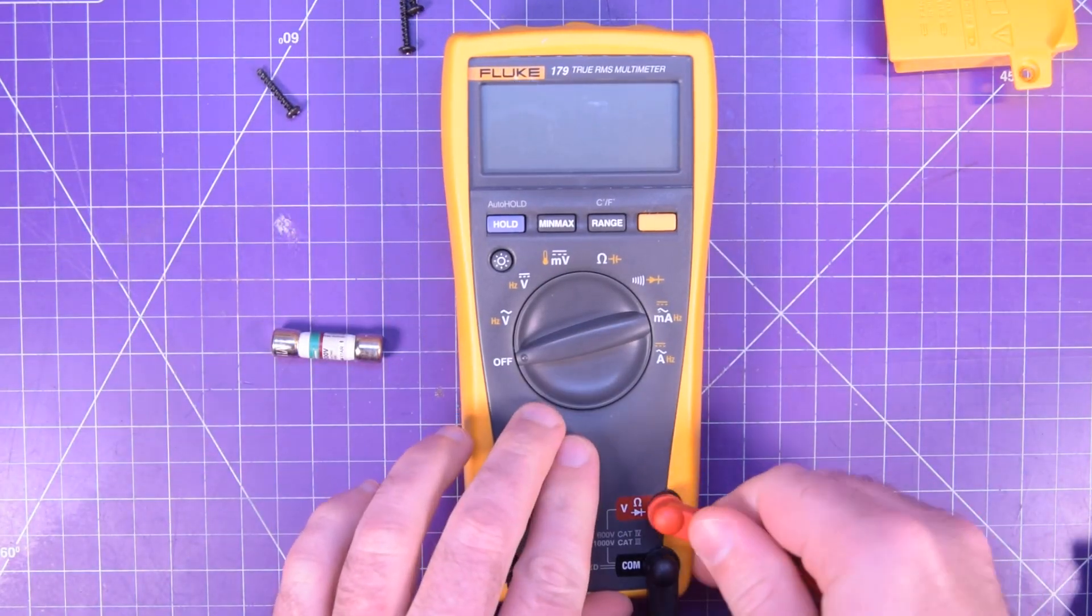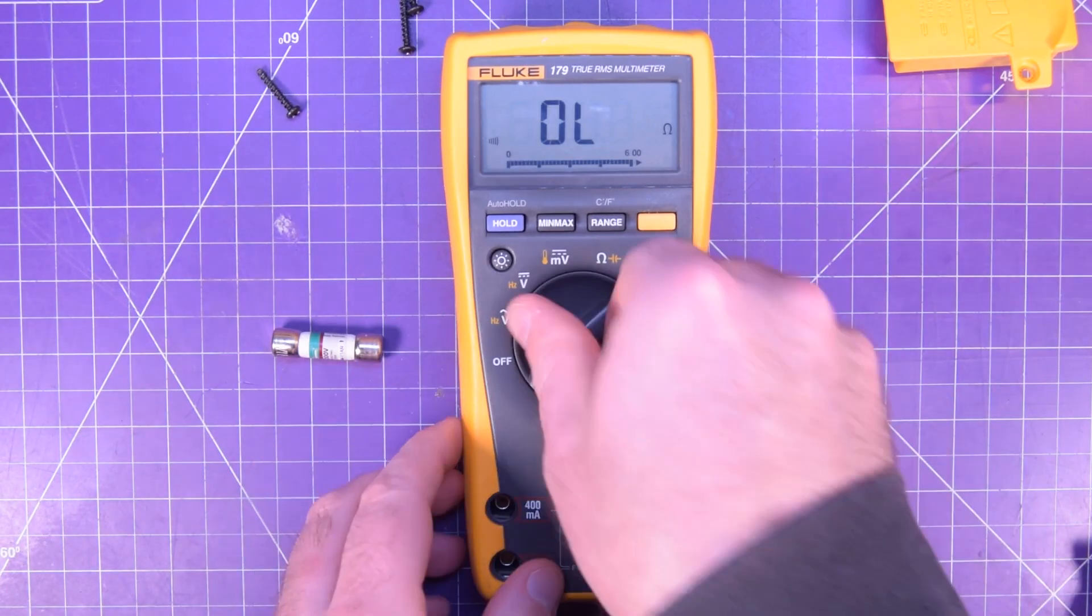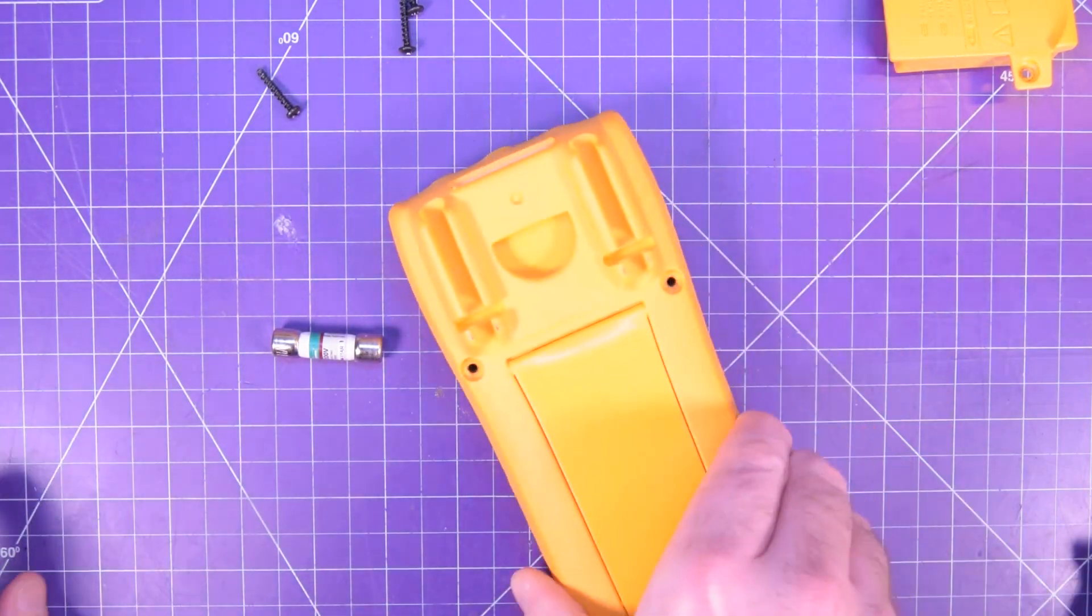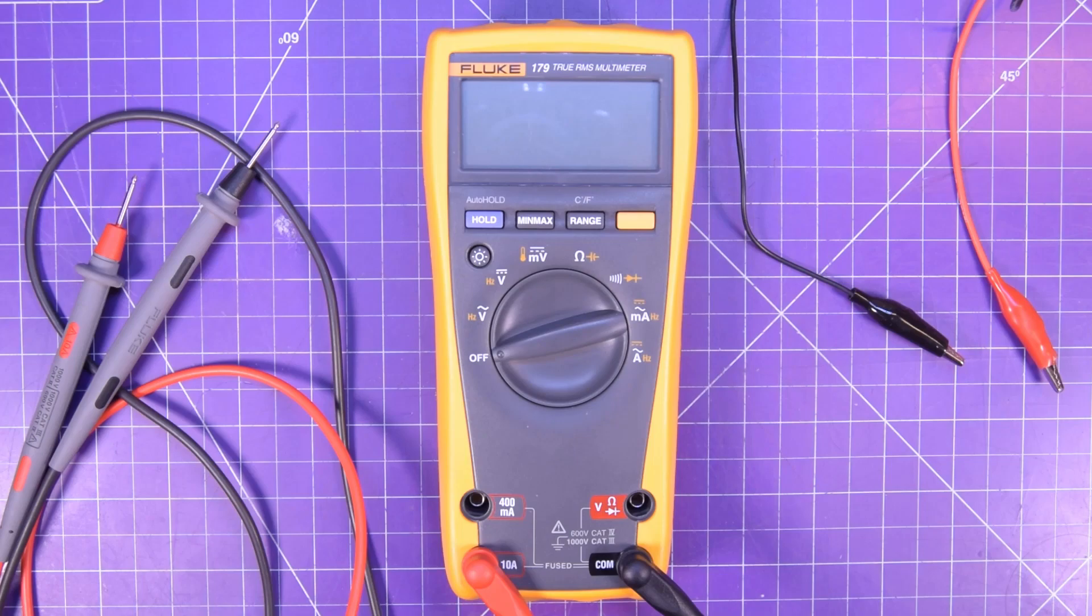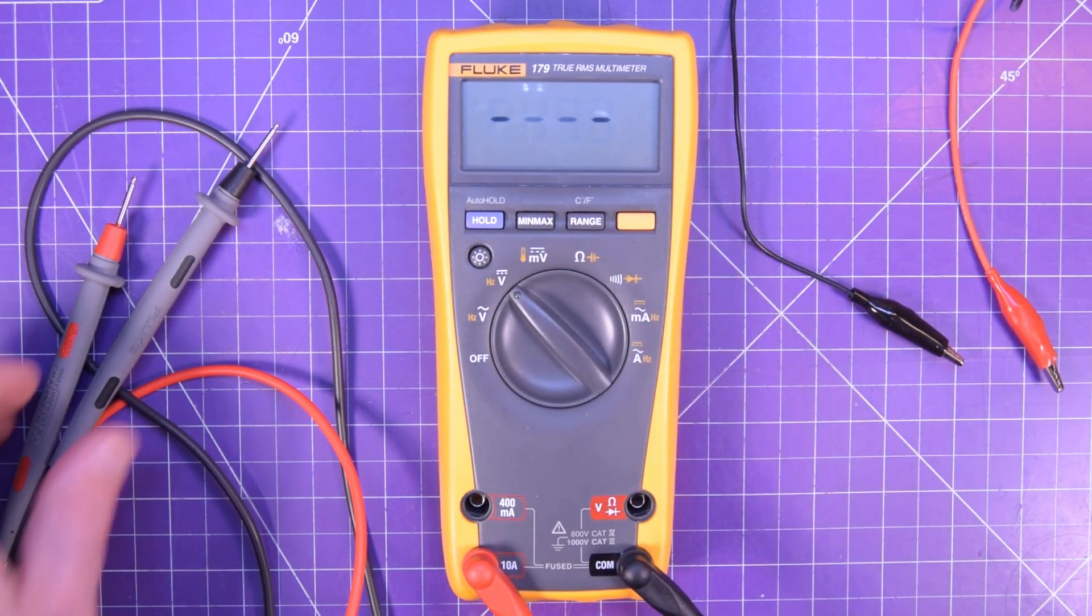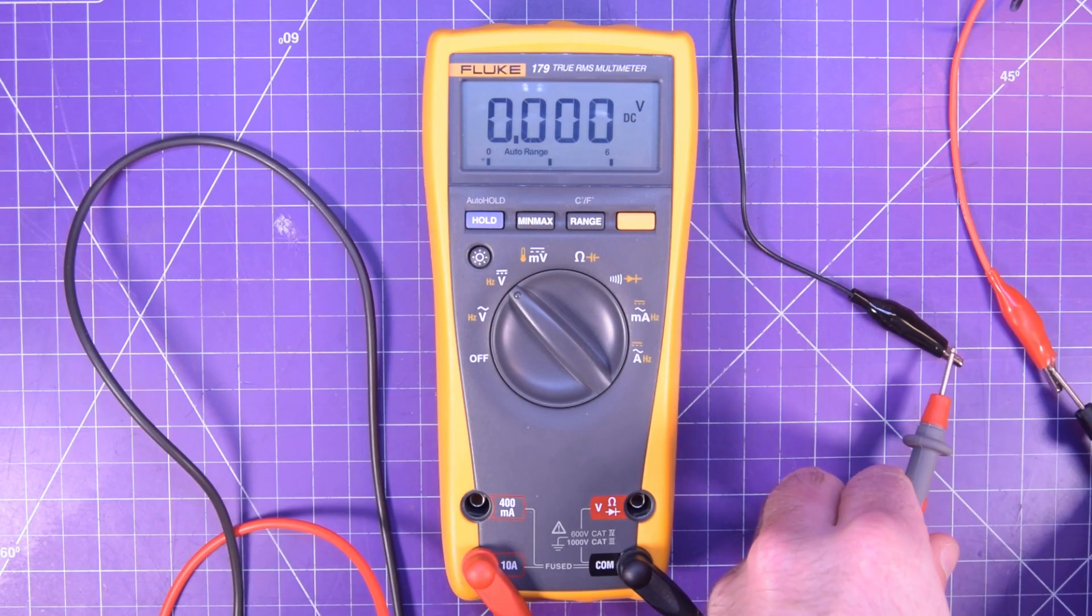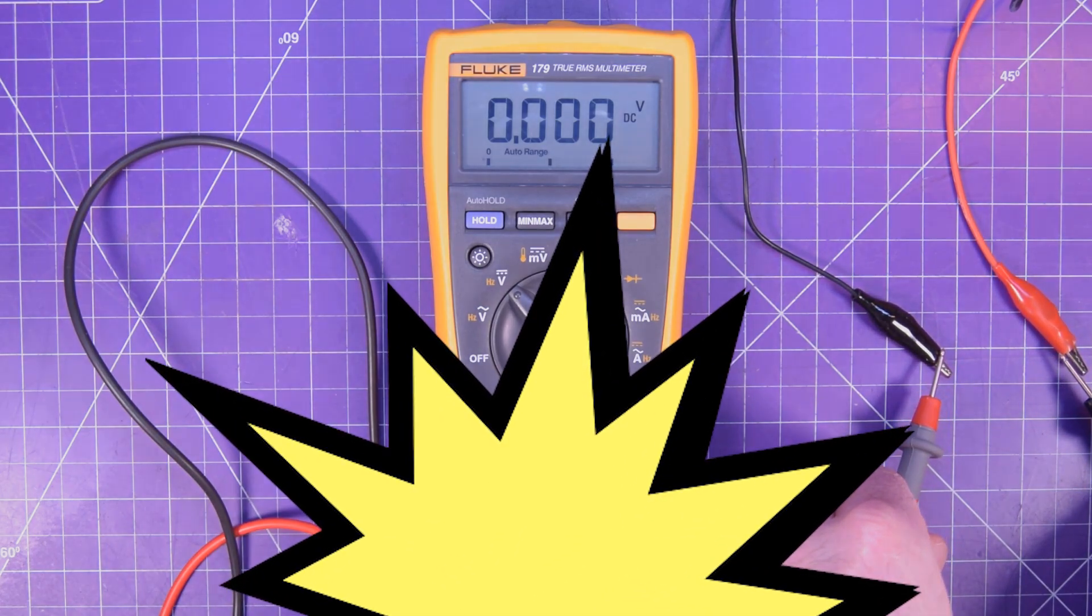If your circuit works normally, but not when your meter is in series, try testing for continuity on your multimeter's fuse. One last thing, be sure to remove the leads from the current jacks as soon as you're done measuring, or you may accidentally blow the fuse next time you go to check volts.